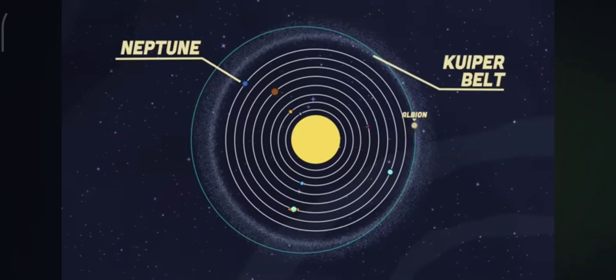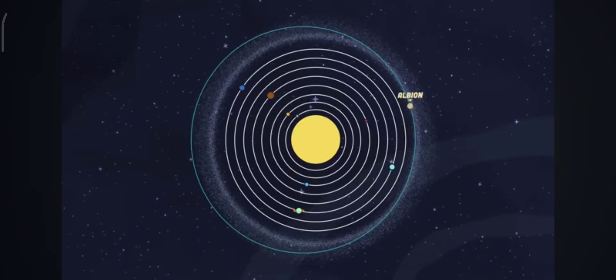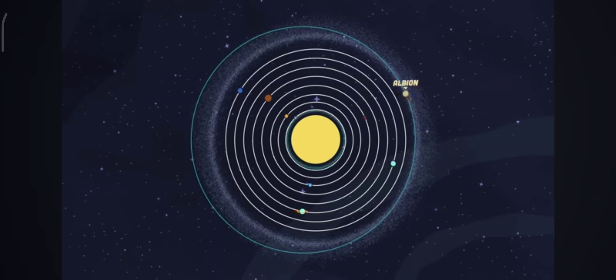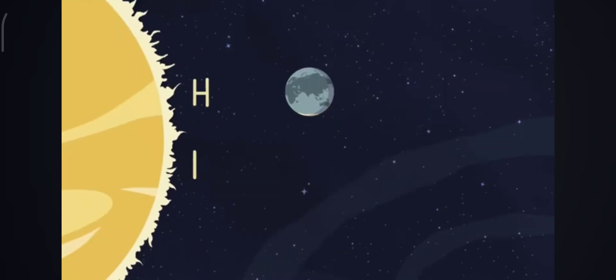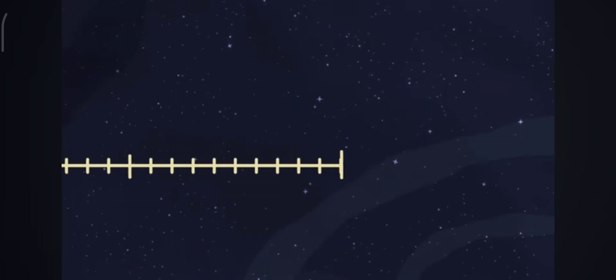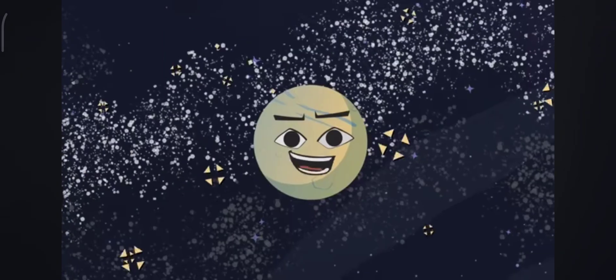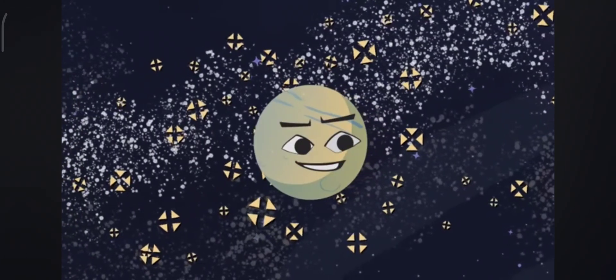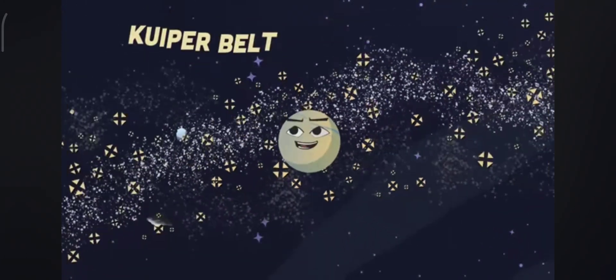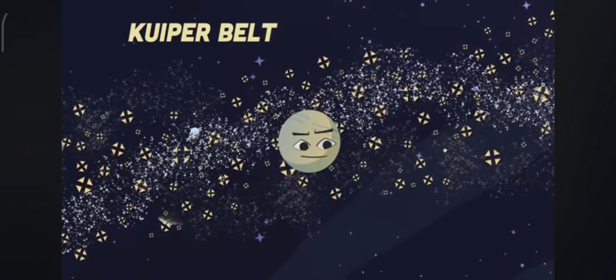In the Kuiper Belt I was discovered. I'm a large asteroid that'll never enter the inner solar system because I'm 30 times the distance from the Earth to the sun. There have been thousands of objects found since my presence was felt in the outer solar system called the Kuiper Belt.